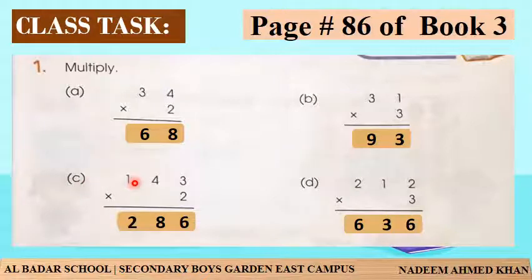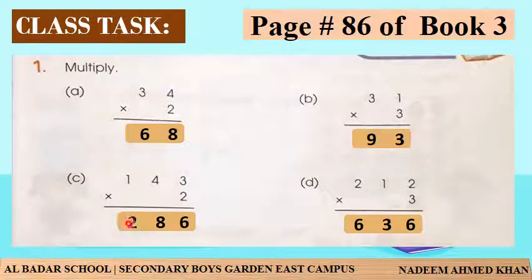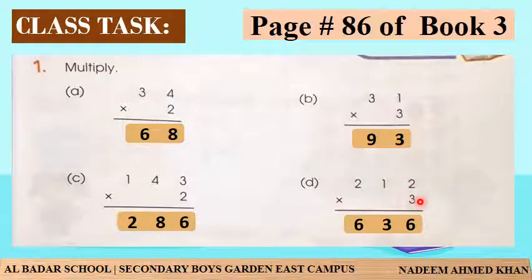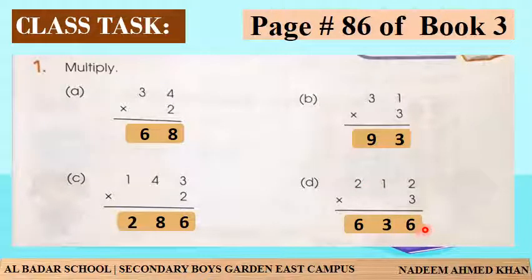C question ہے ہمارے پاس: 143 اور 2 سے ہمیں اسے multiply کرنا ہے۔ تو پیارے بچوں، 2 کا table سب کو یاد ہوگا: 2 threes are 6، 2 fours are 8، 2 ones are 2 - تو 286، یہ ہمارا answer ہے۔ D question کیا ہے ہمارے پاس: 212 multiplied by 3 - 3 twos are 6، 3 ones are 3، 3 twos are 6 - 636، یہ ہمارا answer ہے۔